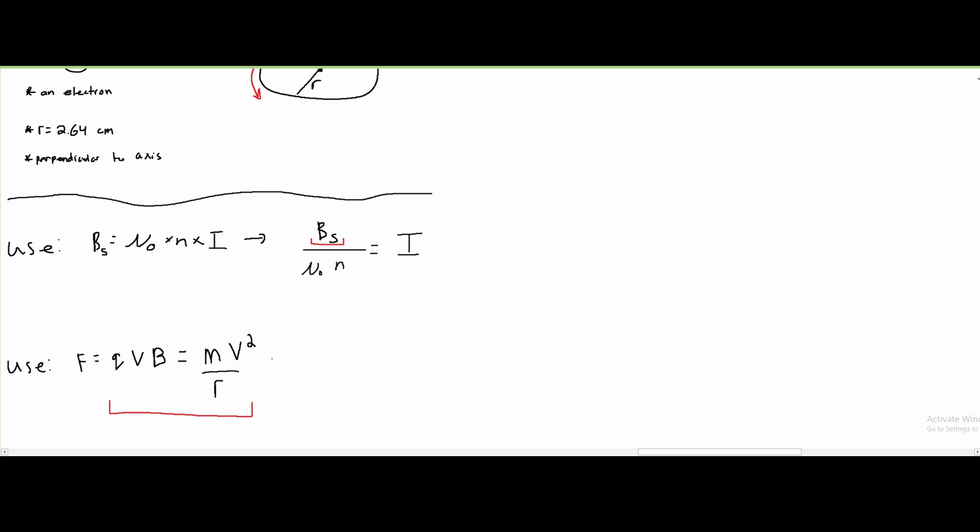We can rewrite this equation so that our B is by itself. We'll write this as our Bs, and that's going to be equal to our mass times velocity squared divided by our R times Q times V. Our Vs are going to cancel, this V and this V, and we can rewrite this and then plug in our values.